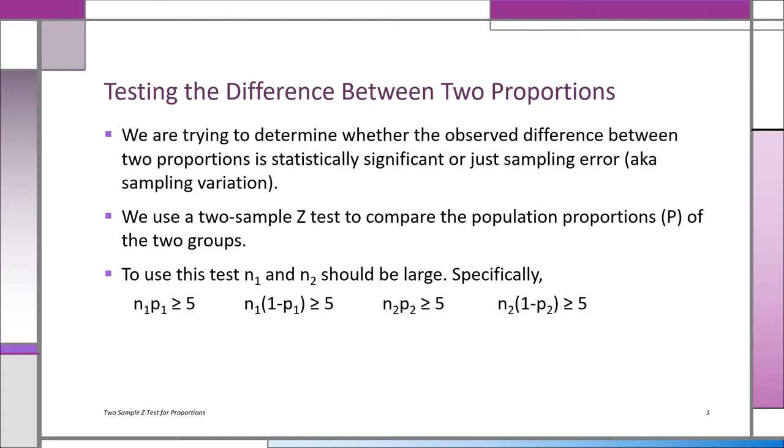n₁ times p₁ should be greater than 5, and n₁ times (1-p₁) greater than 5, n₂p₂ greater than 5, n₂(1-p₂) greater than 5. So you need a relatively large sample to use the z-test for this purpose.